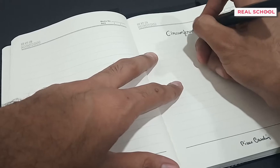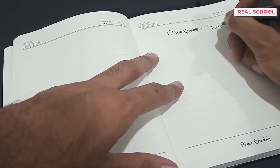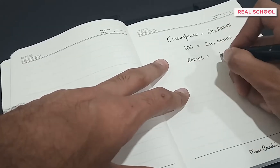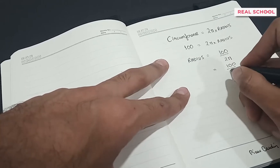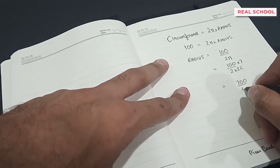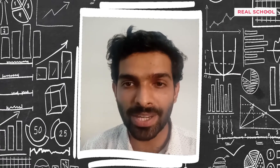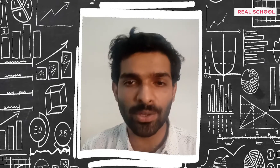If our trundle wheel circumference is 100 centimeters, what will be the radius? Here is a small tabular column which can act as a quick guide if you don't want to do the calculations yourself. Based on the availability of items at home, you can decide on the proportions. Ideally, to measure a desk a 50-centimeter wheel is sufficient, but as dimensions grow bigger — like to measure a room — the size of the wheel needs to be bigger too for efficient measurements.